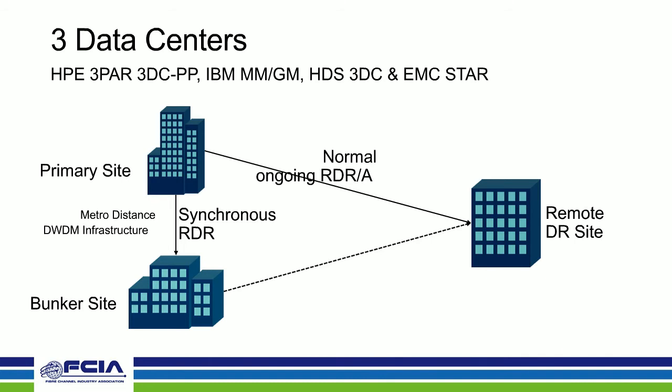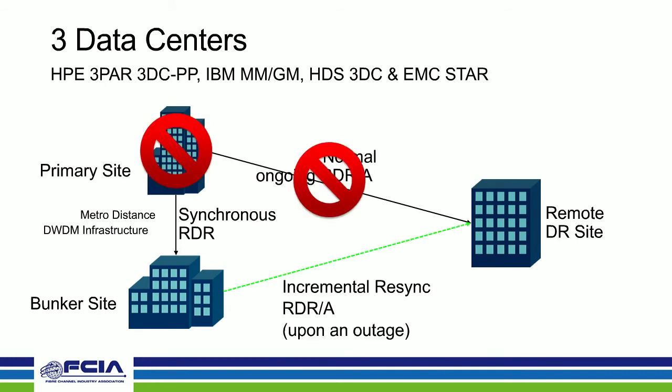Another popular topology is the three-DC topology. The primary site replicates synchronously to a bunker site in a metro area, while also replicating asynchronously to a remote DR site. If the data center is destroyed, or connectivity from the primary site to the remote site goes down, the bunker site starts an incremental re-sync and begins asynchronous replication to the DR site, maintaining data replication continuity.